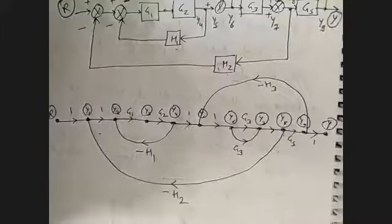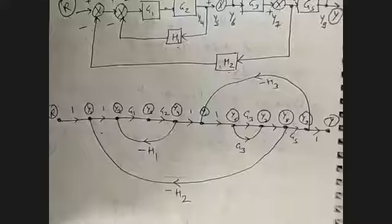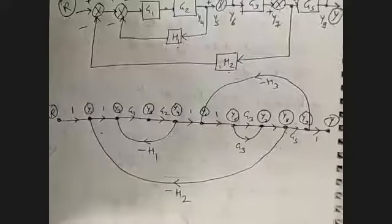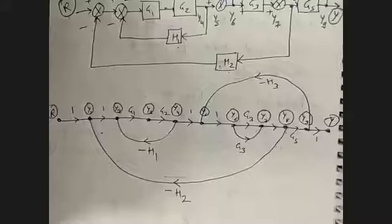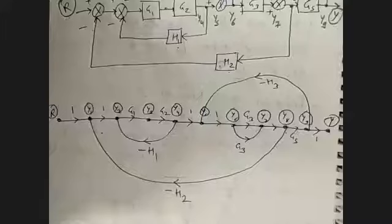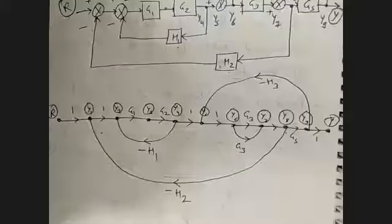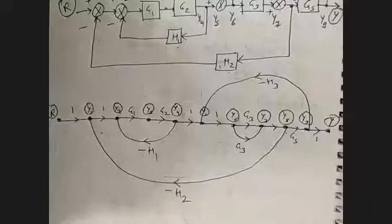This is how we draw a signal flow graph from algebraic equations or from a block diagram. In a block diagram conversion, the concept is simple: all summing points, takeoff points, and signals are counted as nodes. The branch gain is the gain of that block, and the sign at summing points is indicated with the branch gain — positive sign stays positive, negative sign becomes negative gain.